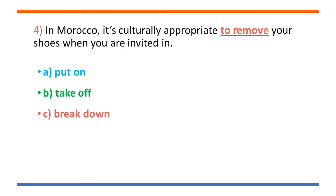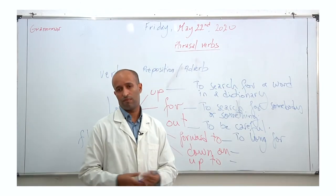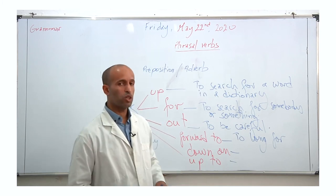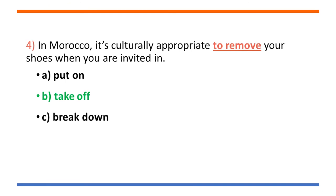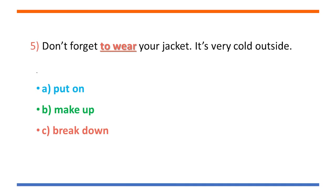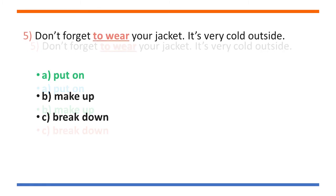Number four: in Morocco, it's culturally appropriate to remove your shoes when someone invites you into their house. The word is 'take off' — in Morocco it's culturally appropriate to take off your shoes when you are invited in. Number five: don't forget to wear your jacket, it's very cold outside. The correct option is 'put on' — don't forget to put on your jacket.